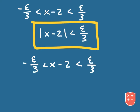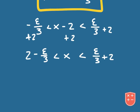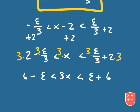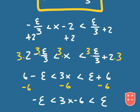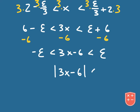What I want to do is add 2 to all three sides, giving us 2 minus epsilon over 3 is less than x is less than epsilon over 3 plus 2. Now I want to get rid of the denominator of 3, so I multiply everything by 3, and that gives me 6 minus epsilon is less than 3x is less than epsilon plus 6. Then I subtract 6 from everything, and we get: negative epsilon is less than 3x minus 6 is less than positive epsilon. I can then write that as the absolute value of 3x minus 6 is less than epsilon.